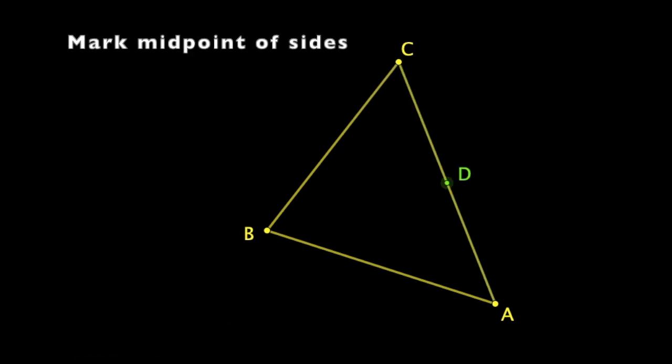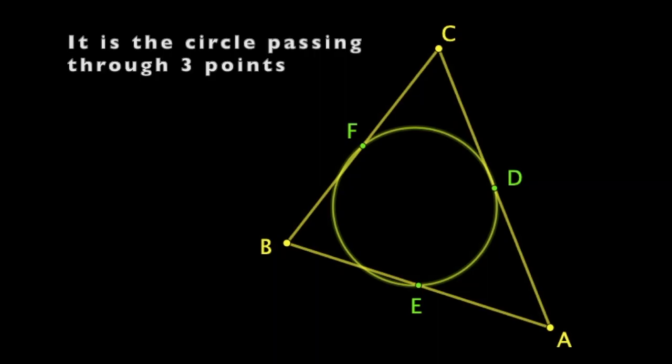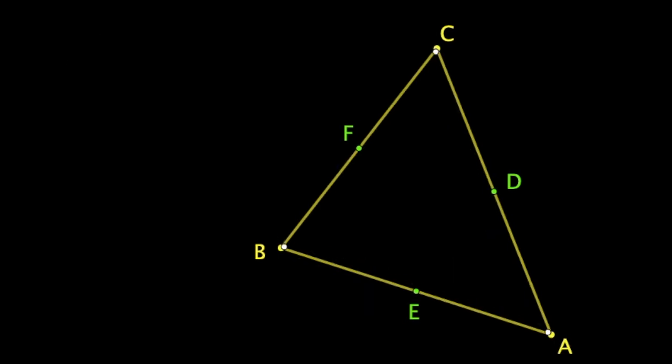Next mark the midpoints of the three sides AC, BC and AB. The circle passing through these three points is known as the nine-point circle and we'll have a closer look into it.